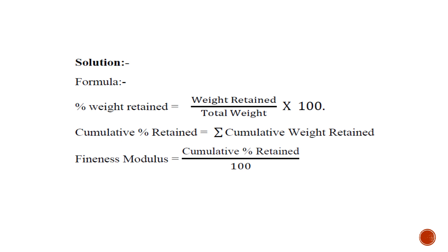The second formula is for calculating the Cumulative Percentage Retain, which is the summation of all Cumulative Weight Retains. Then for finding the Fineness Modulus for Fine Aggregate, you have to divide the Cumulative Percentage Retain by 100.